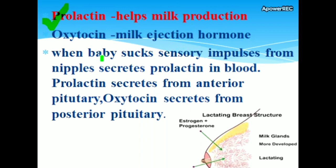Oxytocin is the milk ejection hormone. When a baby sucks, sensory impulses from the nipples stimulate prolactin secretion into the blood. Prolactin is secreted from the anterior pituitary, while oxytocin is secreted from the posterior pituitary.